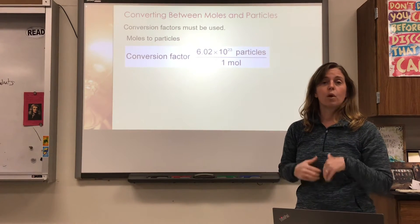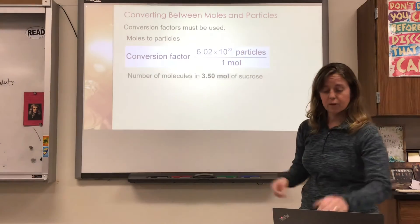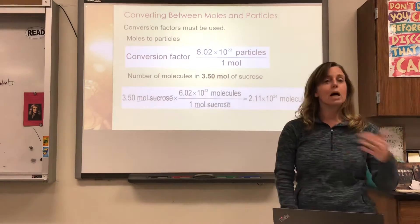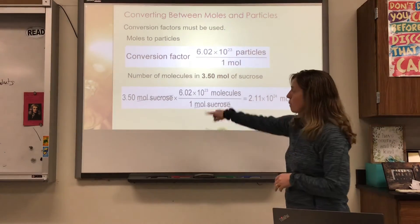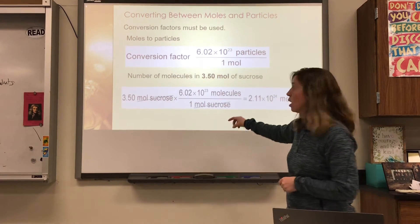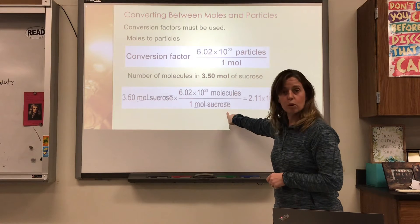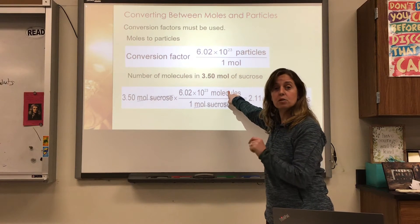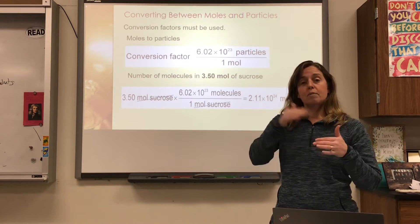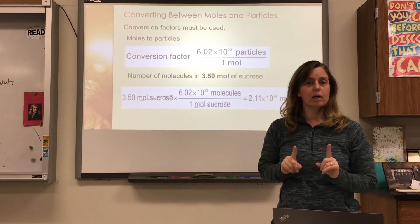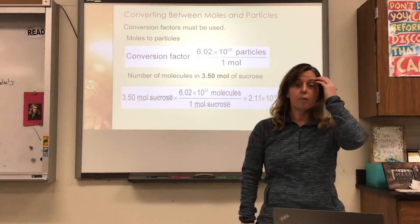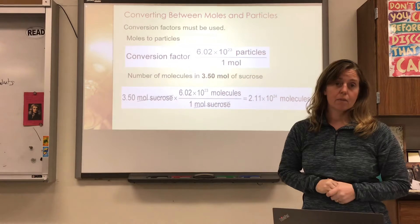Say for example I had 3.5 moles of sucrose and I wanted to know how many molecules of sucrose I had. I'm going to take 3.5 and multiply by the conversion factor: 6.02 times 10 to the 23rd over one mole. When typing this in the calculator using the carrot key, make sure you put Avogadro's number in parentheses — if you don't, when you're dividing by that number it will mess you up.